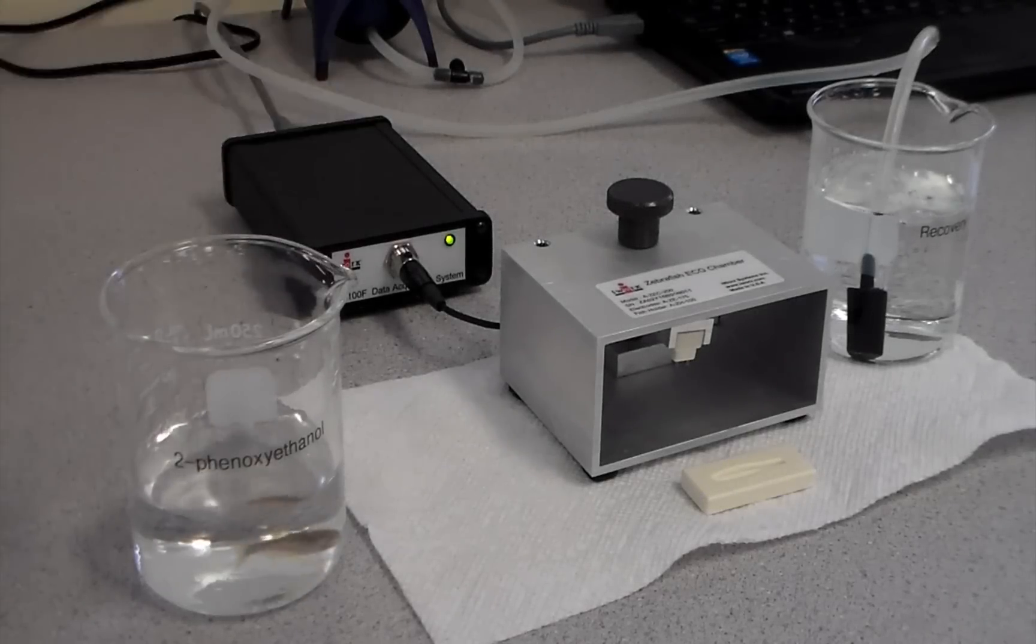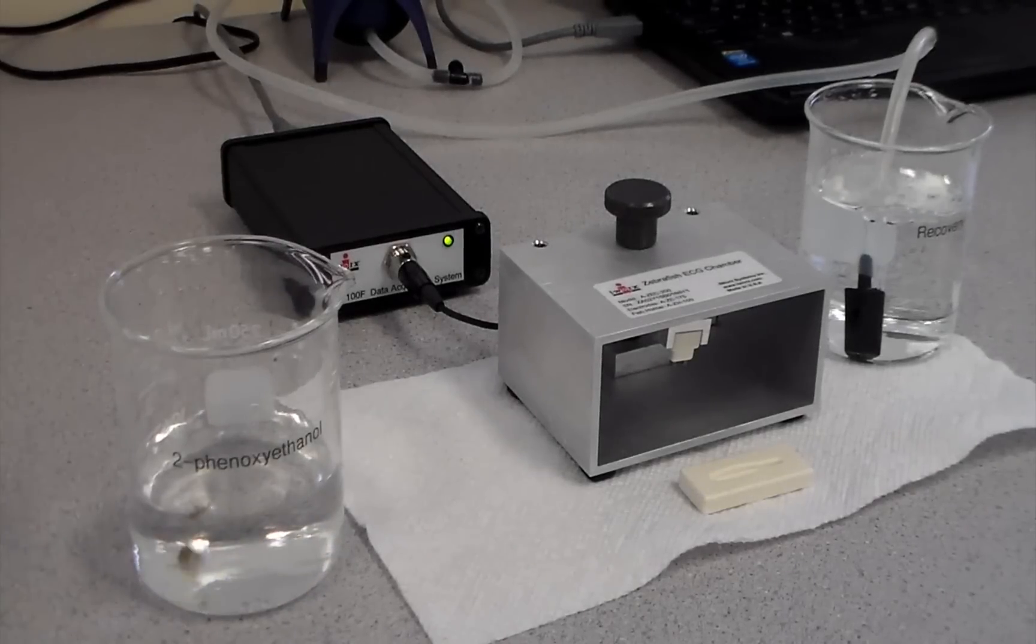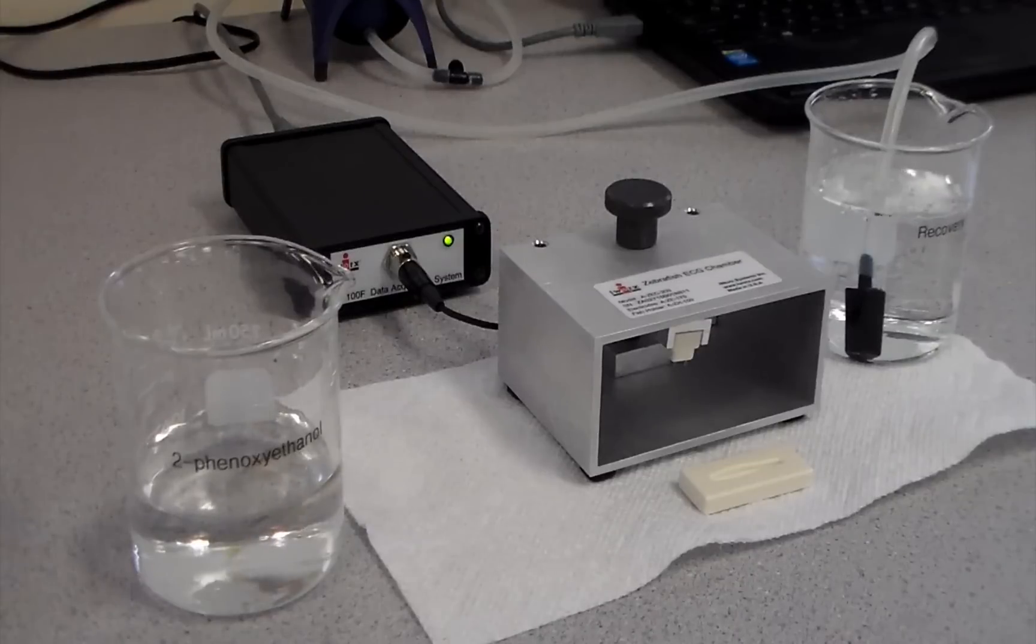For recording ECG, the zebrafish is placed in a 2-phenoxyethanol anesthetizing solution, which is a 1 to 1000 dilution, for approximately 3 minutes until there is minimal gill motion.